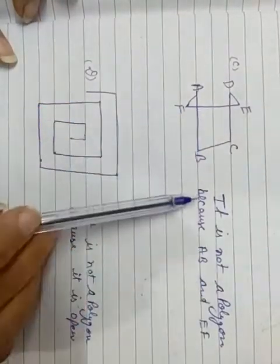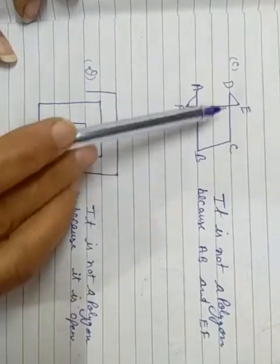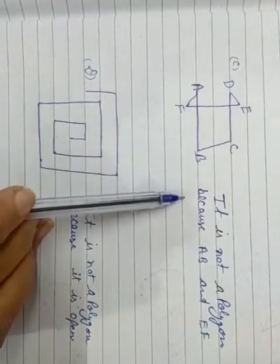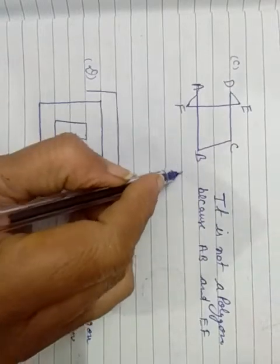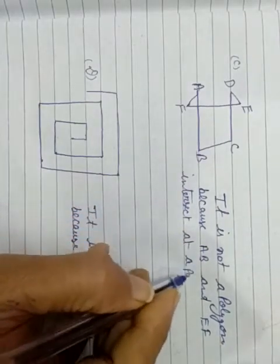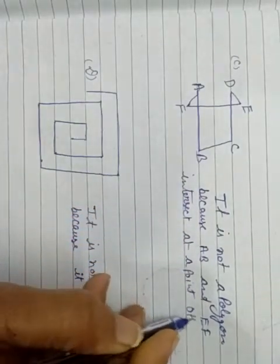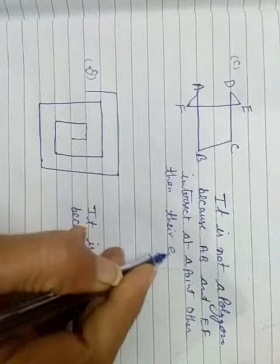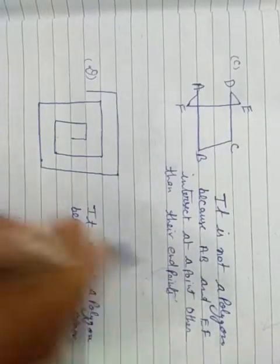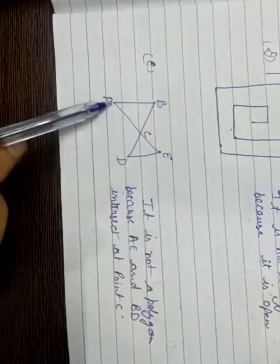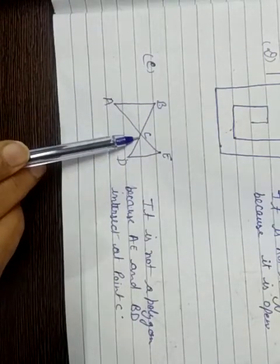Part C is not a polygon because sides AB and EF intersect at a point other than their end points. Part D is not a polygon because it is open. Part E is also not a polygon because sides AE and BD intersect at point C.